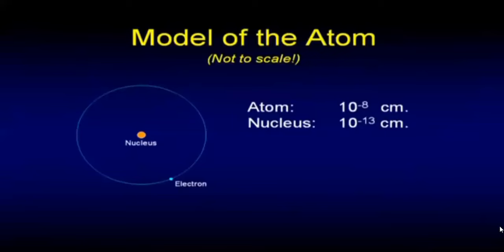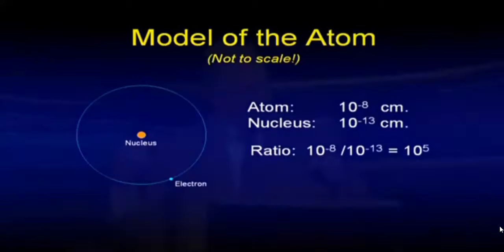The important part isn't the absolute numbers. They're obviously very small. The important thing is the ratio between them. In other words, whatever the nucleus is, the electron is 100,000 times that size in radius. You follow me so far? That's linear. 10 to the fifth. That's 100,000.